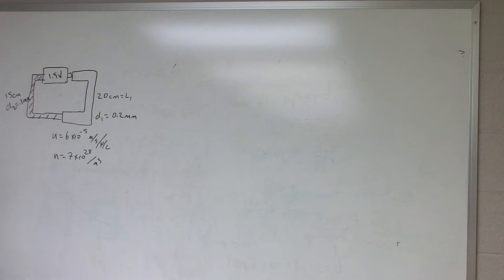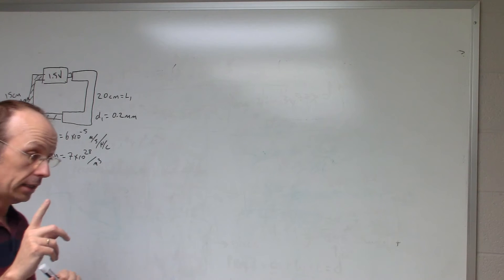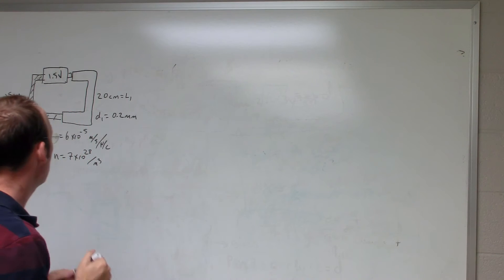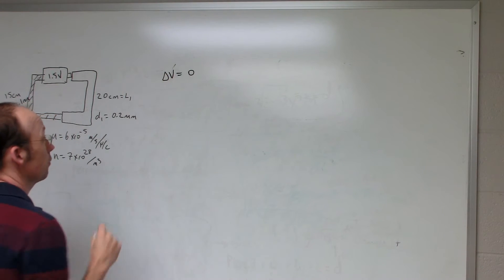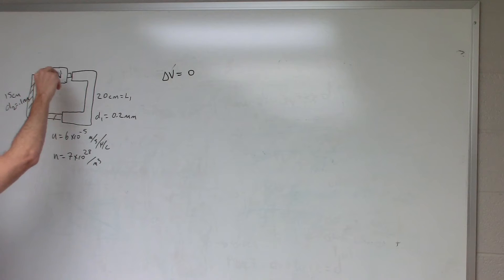Okay, so let's start with the most important thing, and that is the two things that are true. The two things that are true are this: delta V equals zero. If I take the change of potential around any loop, and there's only one loop, it has to be zero.